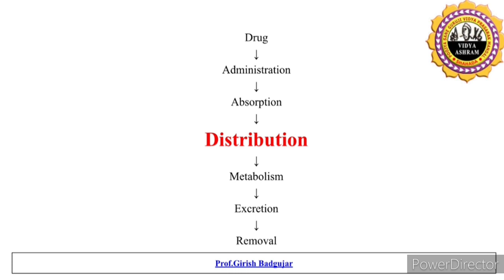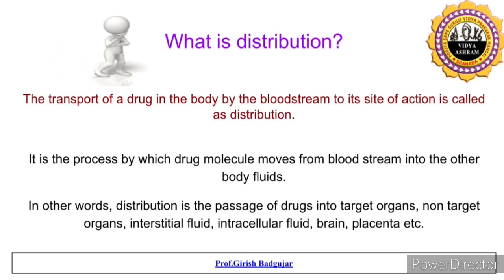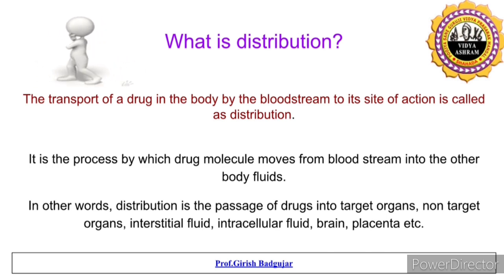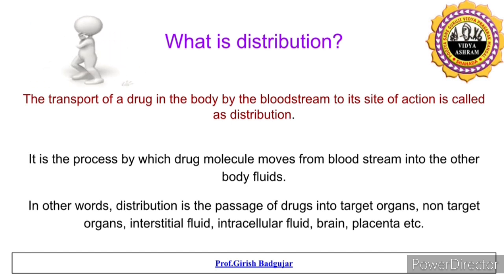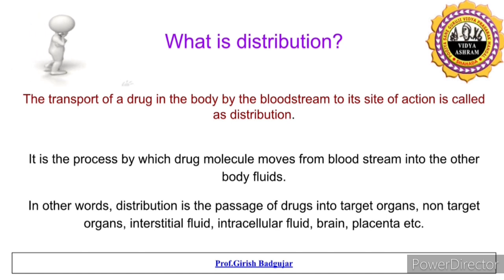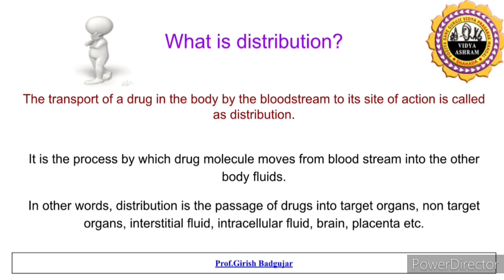Today we will discuss about various processes of distribution and the factors which affect the rate of distribution of drugs. Distribution is defined as the transport of drug in the body by the bloodstream to its site of action. It is the process by which drug molecules move from the bloodstream into other body fluids — including target organs, non-target organs, interstitial fluid, intracellular fluid, brain, placenta, or other body organs.